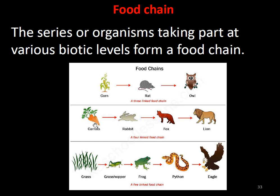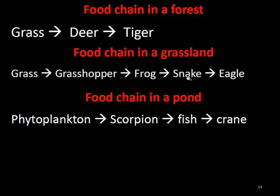A carrot is eaten by a herbivore, the herbivore is eaten by a carnivore, and the carnivore can be eaten by an omnivore — these are primary consumer, secondary consumer, and tertiary consumer, also called trophic level 1, 2, and 3. Similarly, grass is eaten by grasshopper (primary consumer), frog (secondary consumer), python (tertiary consumer), and eagle (fourth consumer). Other examples include grass-deer-tiger found in forests, grasslands, and ponds.